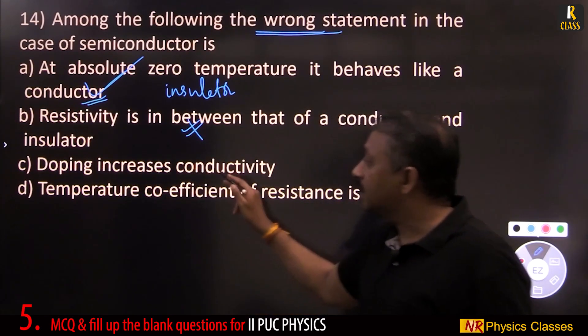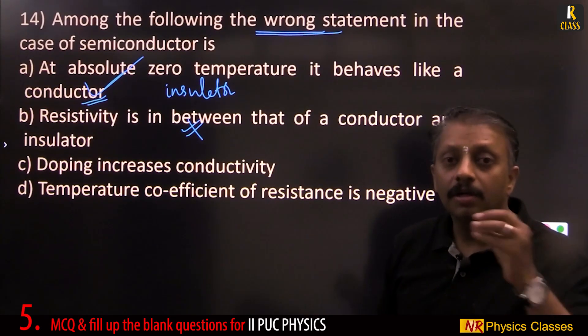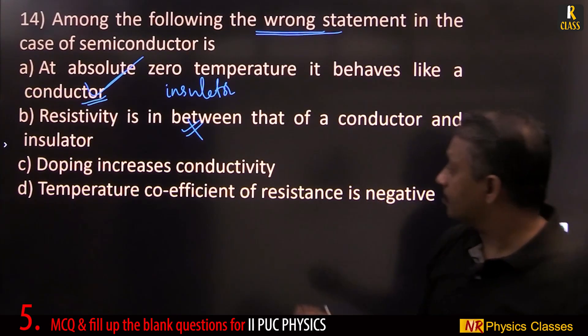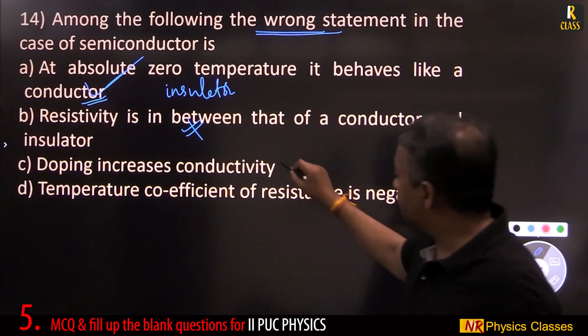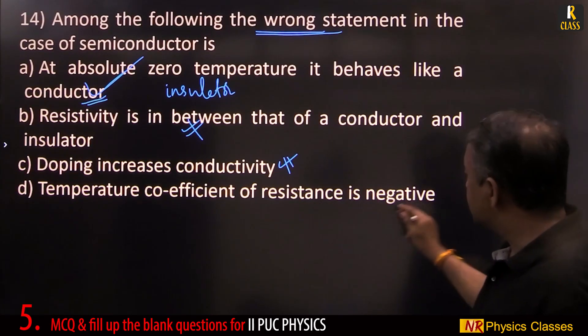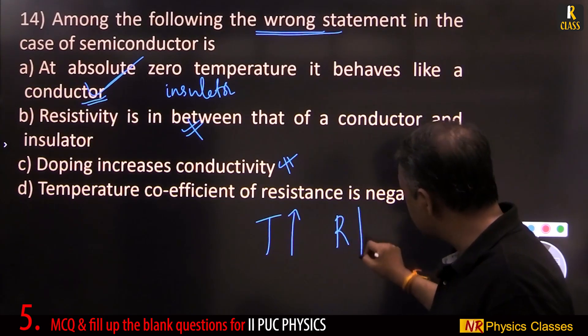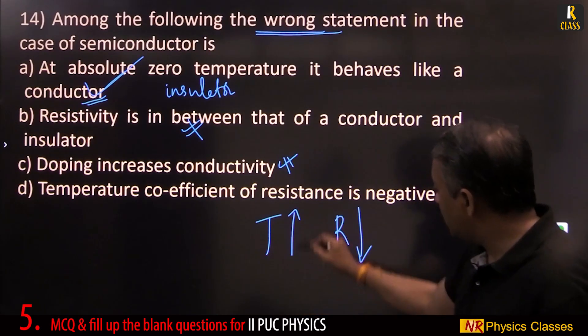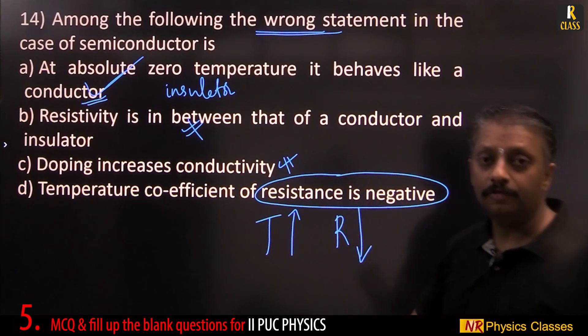Doping increases conductivity. That is why impurities are added. It is not called impurity, it is called doping because performance increases. What do you mean by performance? Performance means conductivity. Temperature coefficient of resistance is negative means increasing temperature decreases resistance in the case of semiconductors. One increases, the other decreases. That is why it is called negative temperature coefficient of resistance.